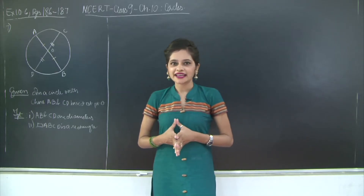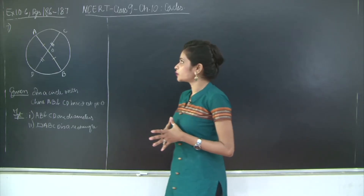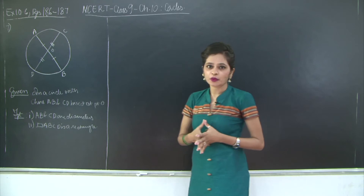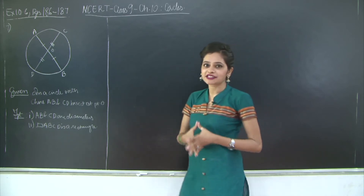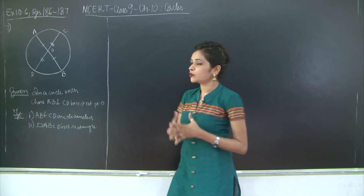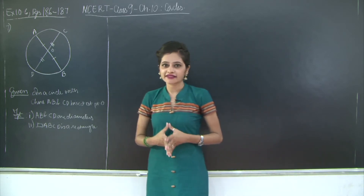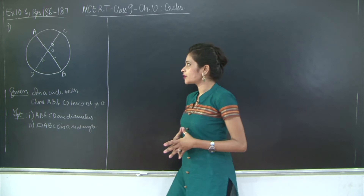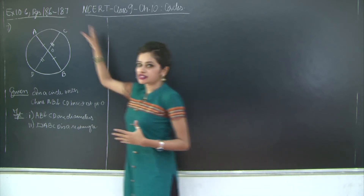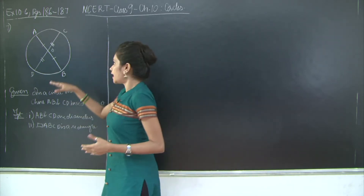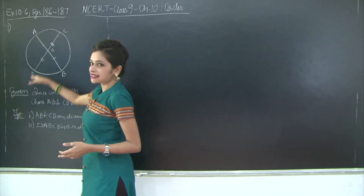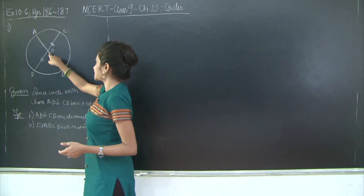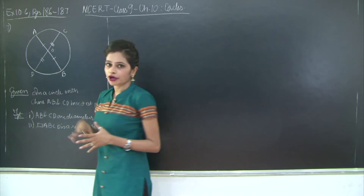Hello students, welcome back. Let us continue with exercise 10.6 of chapter 10, Circles. We will take a look at the 7th question, wherein you have a circle and chords AB and CD bisecting each other at point O.